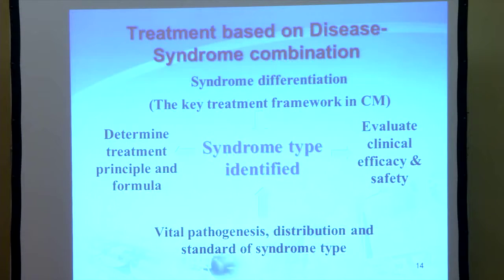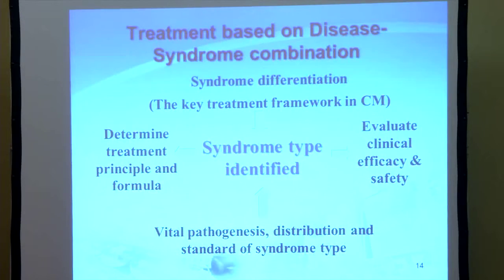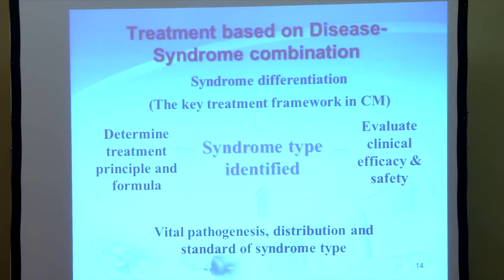In conclusion, when a doctor does syndrome type identification, it is according to vital pathogenesis distribution and standards of syndrome types. After syndrome type identification, the doctor determines the treatment principle and formula. After treatment, the doctor evaluates clinical efficacy and safety. So we can say syndrome differentiation is the key treatment framework in Chinese medicine.